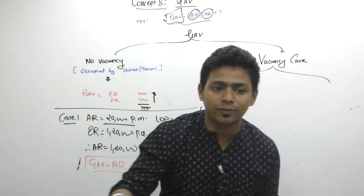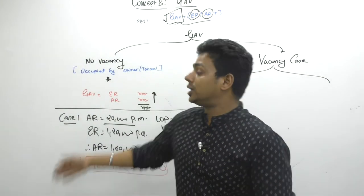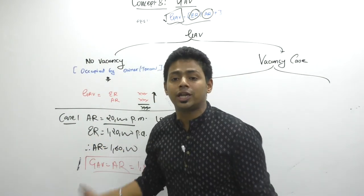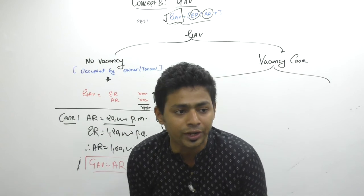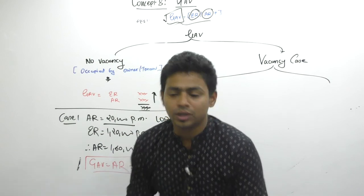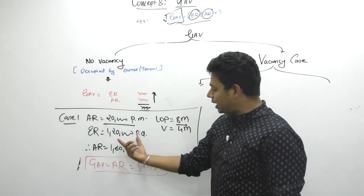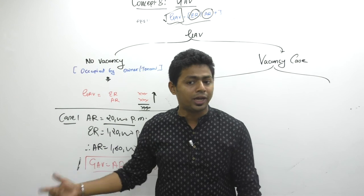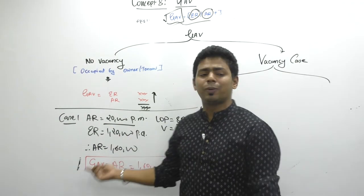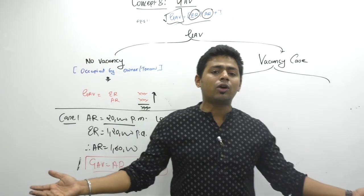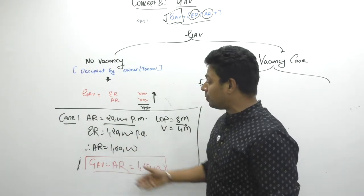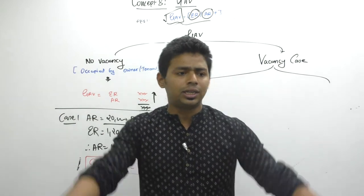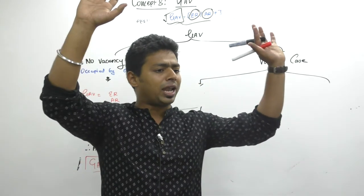Despite vacancy, Assisi is earning more than the expectation of the Government of India. There is vacancy in the property, but still it is more than expected. They are just expecting 1 lakh 20,000 per annum. Assisi in 8 months has earned 1 lakh 60,000. They are happy with 1 lakh 60.